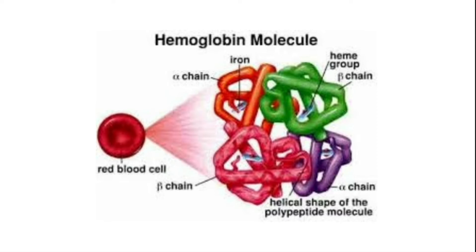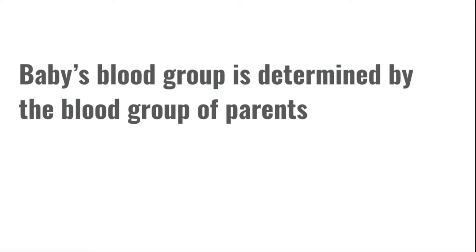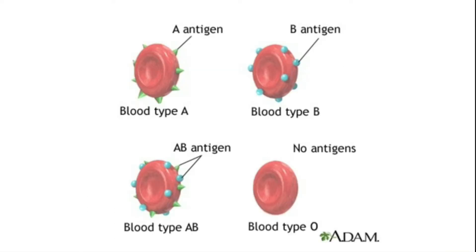We all know our blood is red in colour, and this is because of the RBC present in our blood. In RBC, there is a protein called hemoglobin which is responsible for the red colour of the blood. Our blood group is determined by the blood group of our parents. There are some types of proteins present on the RBC — we call these proteins antigens, and these antigens determine the blood group.